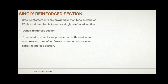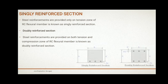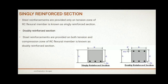In case of a doubly reinforced section, the steel is provided in both zones — that is the Compression Zone as well as the Tension Zone. Here you can see a figure which shows the Singly Reinforced Section and Doubly Reinforced Section, and how the steel is provided in the two different sections.